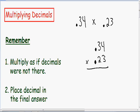We have 3 times 4 which is just 12. Carry the 1. 3 times 3 is 9. 9 plus 1 is 10.